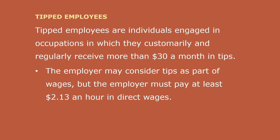Tipped employees are individuals engaged in occupations in which they customarily and regularly receive more than $30 a month in tips. The employer may consider tips as part of wages, but the employer must pay at least $2.13 an hour in direct wages. The employer who elects to use the tip credit provision must inform the employee in advance and must be able to show that the employee receives at least the applicable minimum wage with direct wages and the tip credit allowance combined. If an employee's tips combined with the employee's direct wages of at least $2.13 per hour do not equal the minimum hourly wage, the employer must make up the difference.